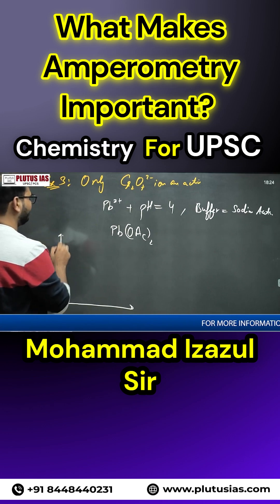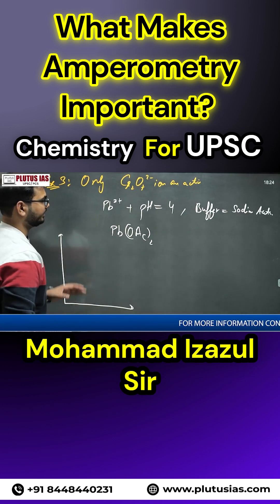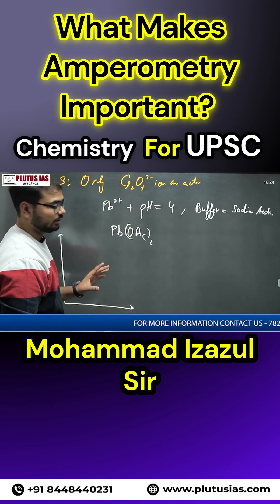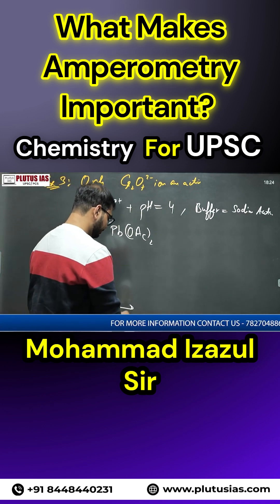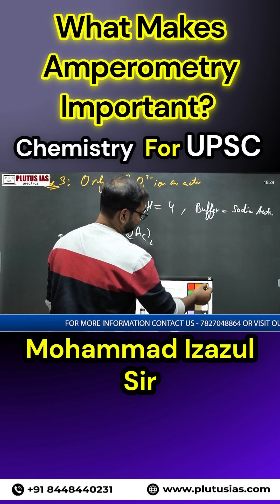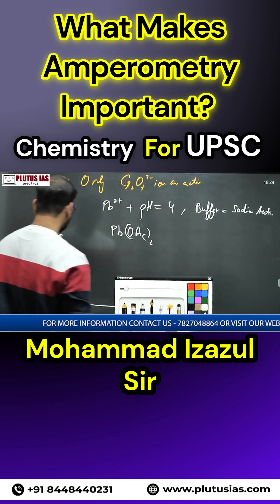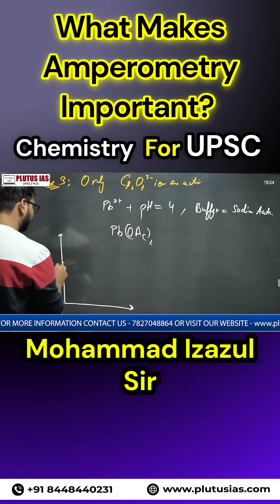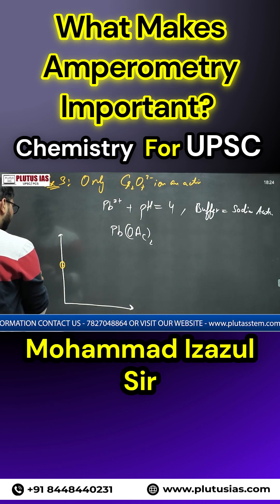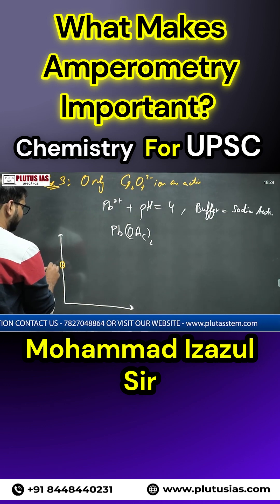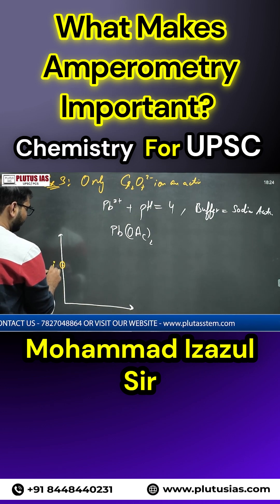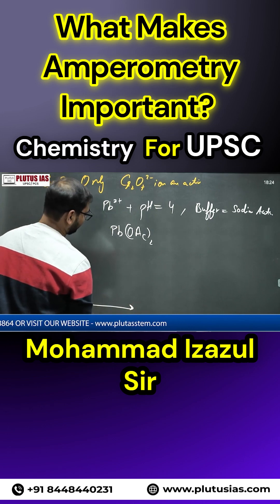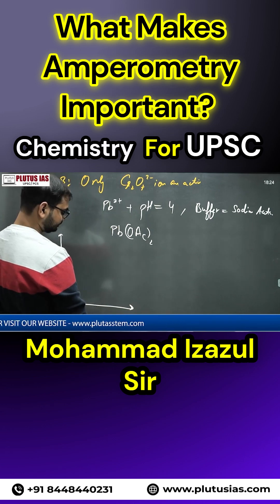Since there are no Pb²⁺ ions in the solution, there will be no current from Pb²⁺ before the equivalence point. So the current will start directly from the residual current IR, not from the diffusion current, as you increase the volume being added.